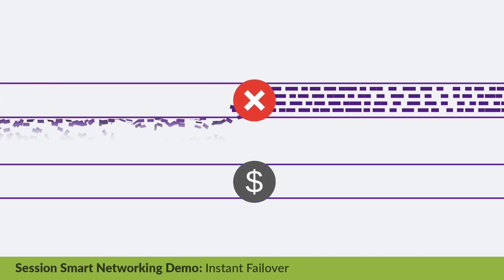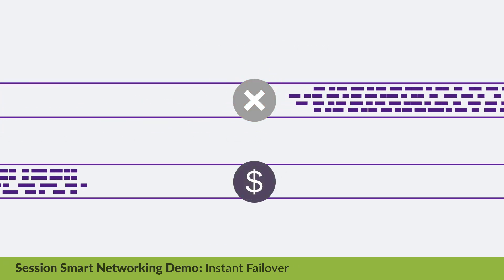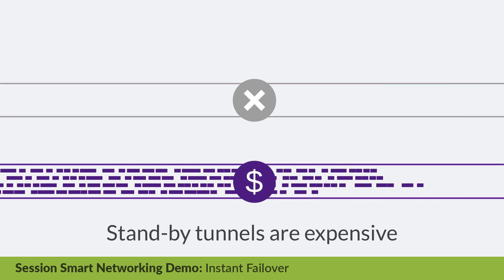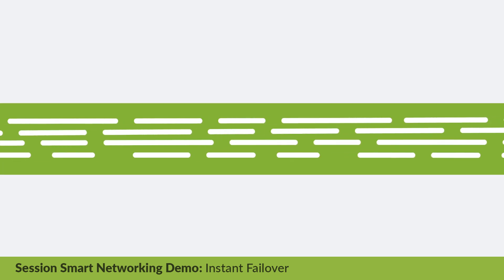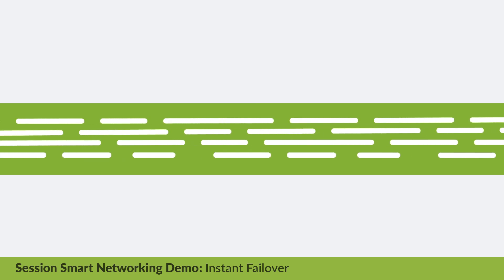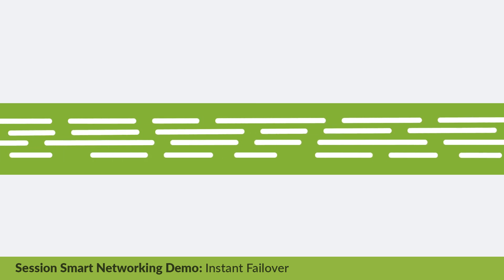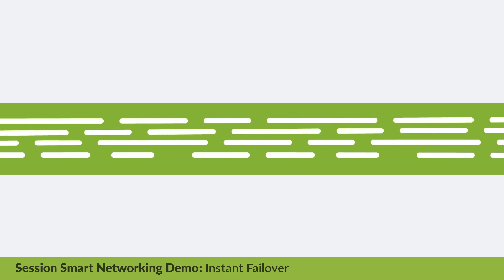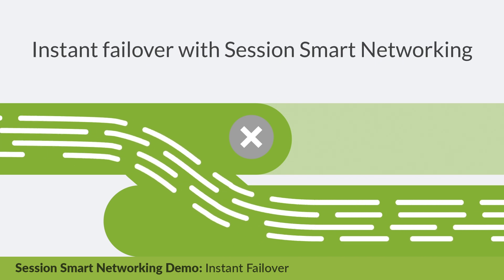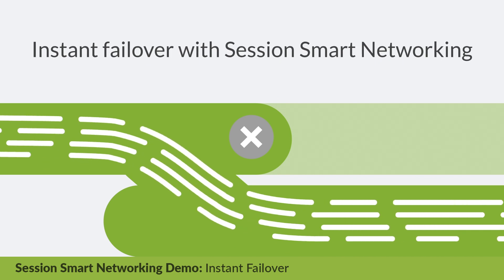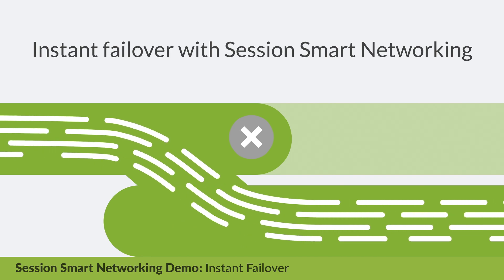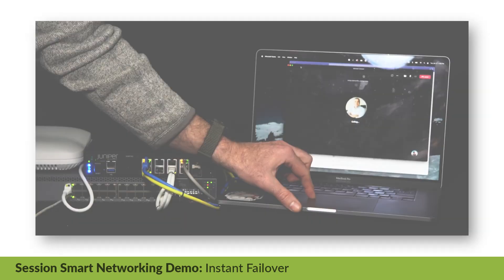To avoid this, a hot standby tunnel can be established, but this is expensive to maintain. With Juniper's tunnel-free Session Smart Networking, if traffic is not meeting SLAs, routers will instantly migrate traffic from a primary to a secondary path, ensuring there is no disruption to the end-user experience. Let's test it out.